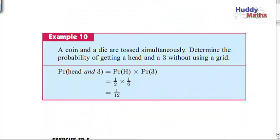Here's an example: a coin and a die — a die is the singular of dice — are tossed simultaneously. Determine the probability of getting a head and a three without using a grid. This is your analytical approach: the event is probability of a head AND a three, so we break it up — probability of a head times probability of a three.